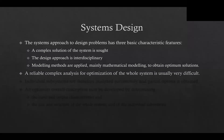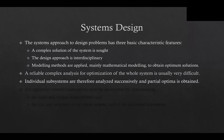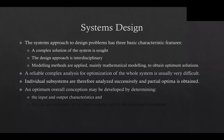A reliable complex analysis for optimization of the whole system is usually very difficult. Therefore, individual subsystems are analyzed successively and partially optimized. However, their sum need not essentially be the optimum for the whole system due to the interdependence and feedback existing between subsystems. An optimum overall conception may be developed by determining the input and output characteristics as well as the size and structure of the whole system and of the individual subsystems.